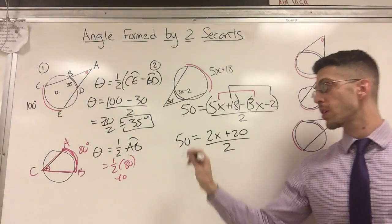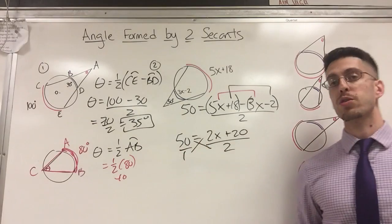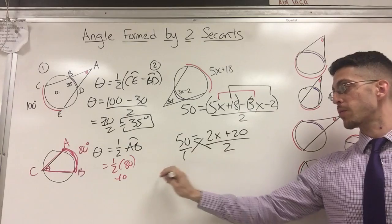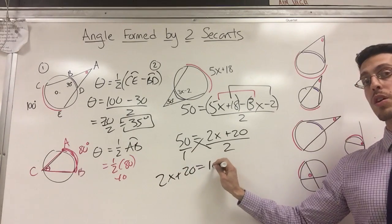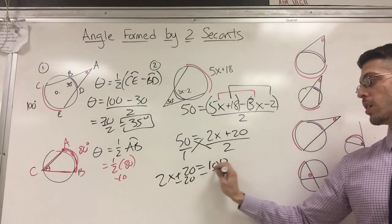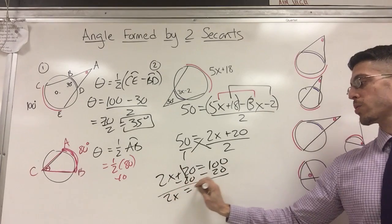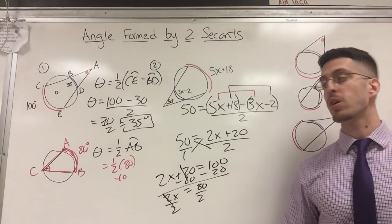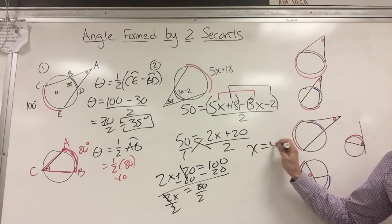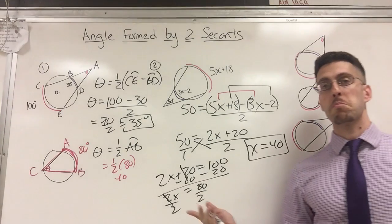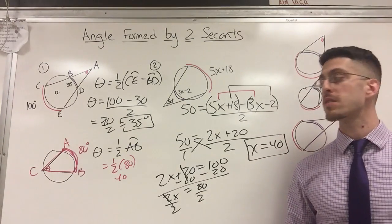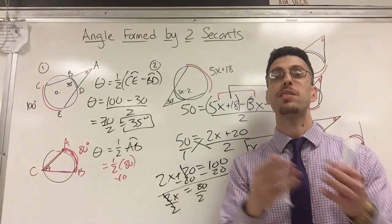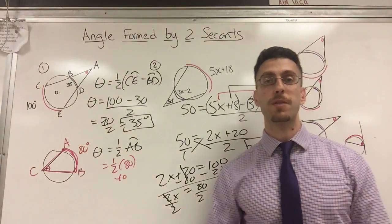So 50 equals 2x plus 20 over 2. If you remember anything about proportions, you put this over 1 and you cross multiply. So this way gives me 100. This way gives me 2x plus 20. So that equals 100. Subtract 20 on both sides. 2x equals 80. Divide by 2. And I got x alone. x equals 40. So basically the theme is play around with the algebra. You get different combinations, but big minus little divide by two. Thanks for watching. See ya.